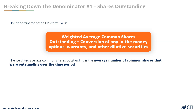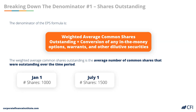For example, let's look at a one-year time period. On January 1st, the number of shares outstanding was 1,000. On July 1st, the company issued 500 shares, bringing the number of shares outstanding to 1,500. This would make the weighted average number of shares for the year 1,250, because there were 1,000 shares outstanding for the first half and 1,500 shares outstanding for the second half of the year.